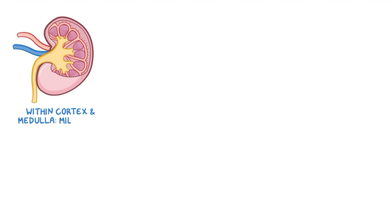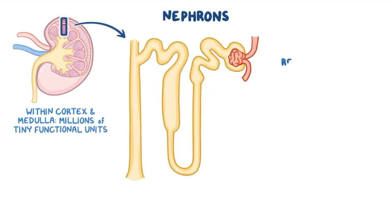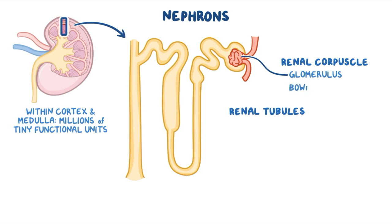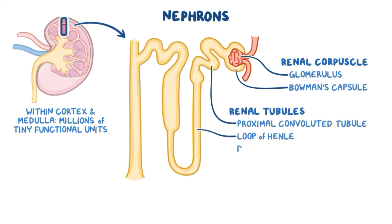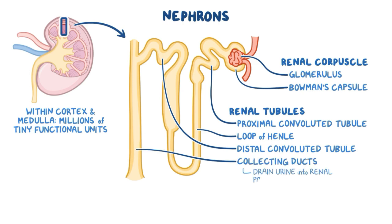Within the cortex and the medulla, there are millions of tiny functional units called nephrons, which consist of a renal corpuscle and a set of renal tubules. The renal corpuscle is made up of the glomerulus, a tiny bundle of capillaries, and the Bowman's capsule, which is a cup-shaped structure that surrounds the glomerulus. Blood gets filtered through the glomerulus and then travels through the renal tubules — in order: the proximal convoluted tubule, loop of Henle, distal convoluted tubule, and finally, collecting ducts, which drain urine into the renal papillae and eventually empty into the renal pelvis.